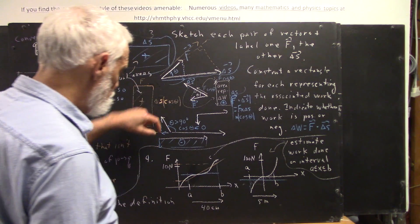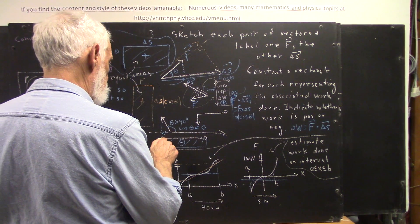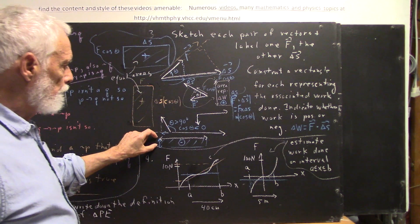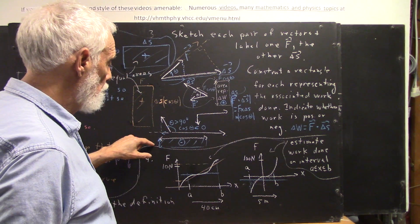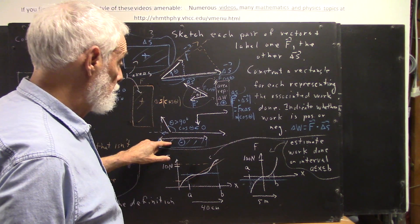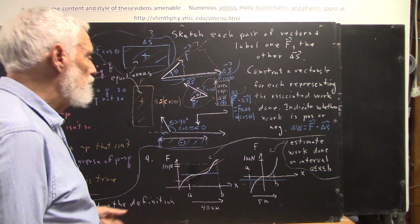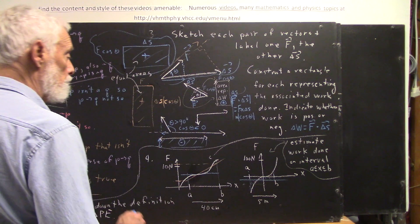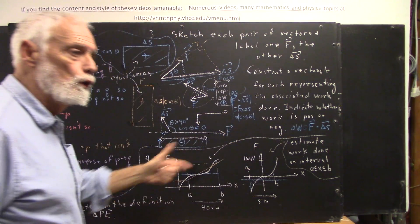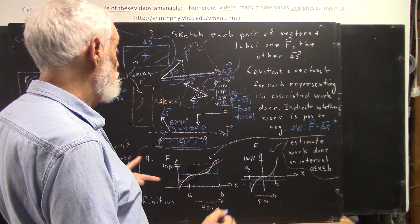This rectangle has one side representing the length of this vector — I'll put the double arrow on it to indicate we're just looking at a magnitude — and the other side is the length of the other vector. I multiply those two lengths and put a negative sign because the projection is in the direction opposite the vector projected upon. It doesn't matter which I call F and which I call delta S — we get the same area.